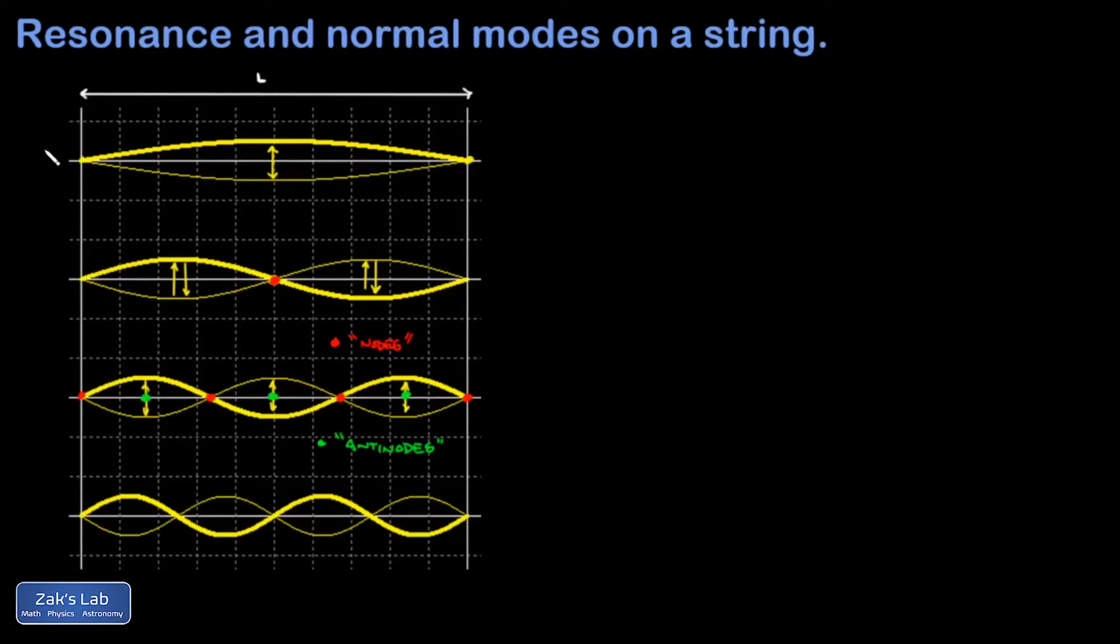If I just label these resonances by frequency, I'm going to call that first one F1, second one F2, third one F3, fourth one F4.